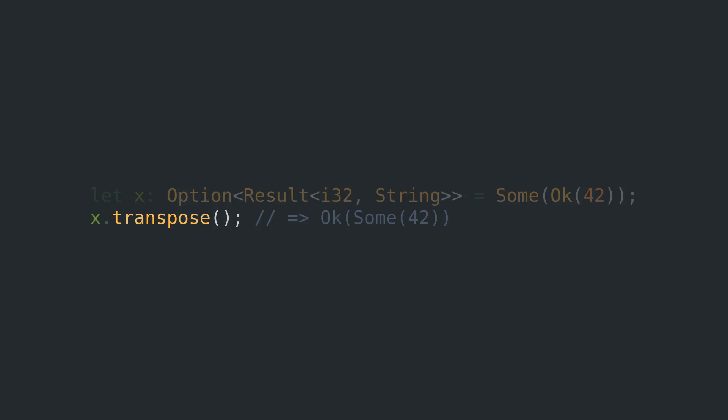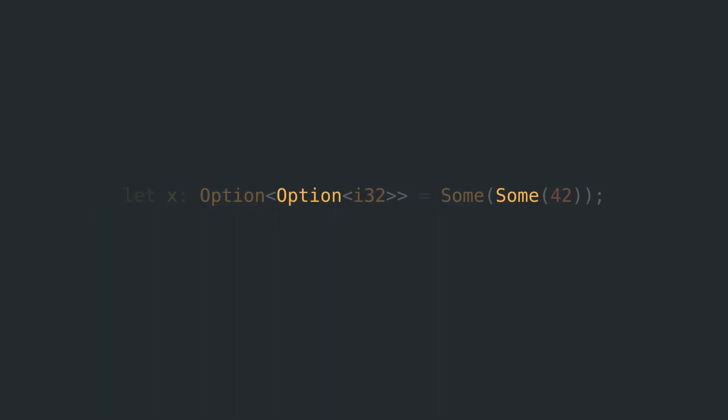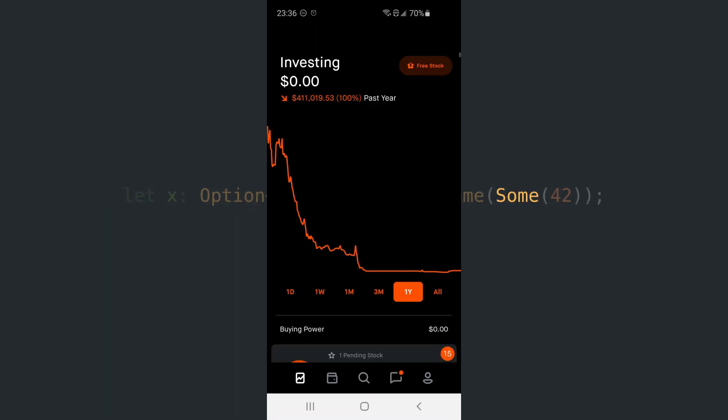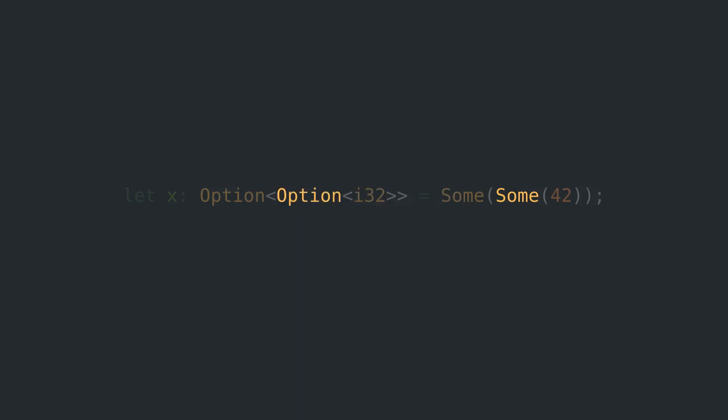Who uses functions like this? If you are already on the next level, you're probably not dealing with options of results, but you're dealing with options of options. As long as you're not trading options, you should be totally fine though. Flatten lets you reduce the level of nested options by one level.